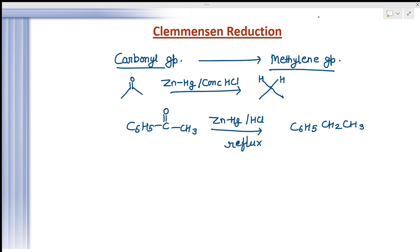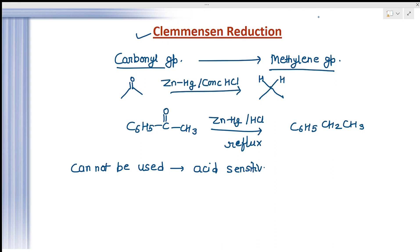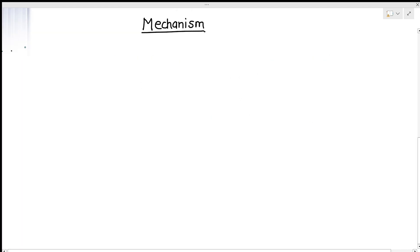Both reactions give the same result, but Clemmensen reduction is easier to perform. We use Wolff-Kishner reduction when acid-sensitive groups are present, because Clemmensen reduction cannot be used with acid-sensitive groups like the OH group.